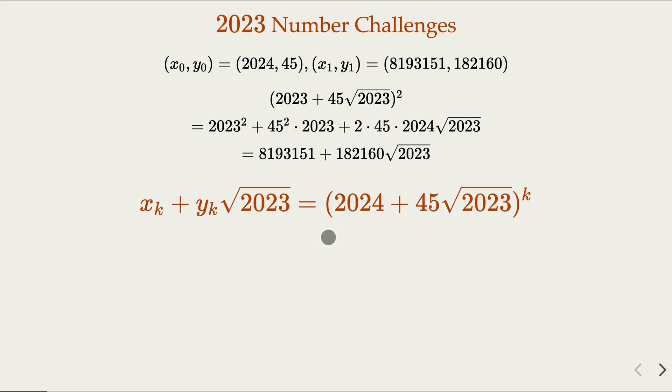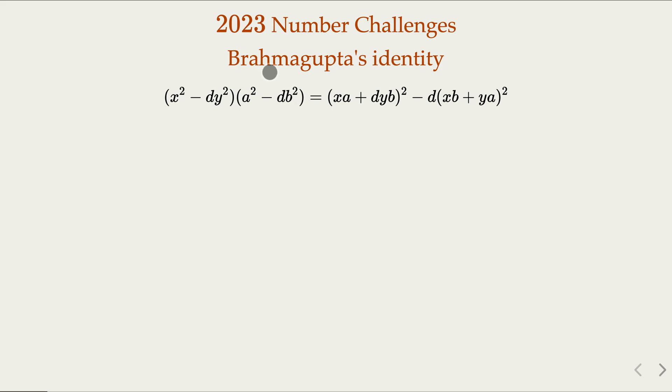Before we close the video, I would like to introduce another method. This is a mathematician in India. Brahmagupta's identity is going to be very useful in solving Pell's equation. Actually, this guy solved some of the famous equations, like when d equals 61 and when d equals 92. It turns out that the fundamental solution is very big. In our case, d equals 2023.